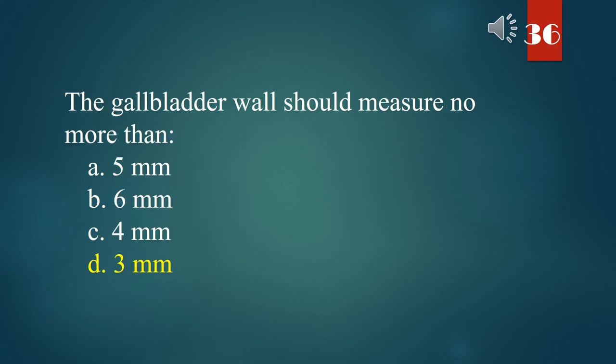The gallbladder wall should measure no more than: A. 5 mm. B. 6 mm. C. 4 mm. D. 3 mm. The answer is D. 3 mm.